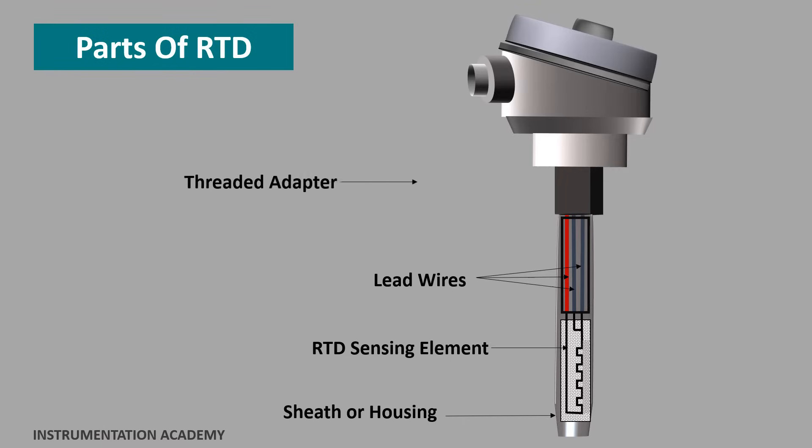Threaded adapter. The threaded adapter is welded over the rear housing of the sensor sheath. One end of the threaded adapter threads into a thermal well or directly into the process piping. The other end is typically threaded into a temperature transmitter.